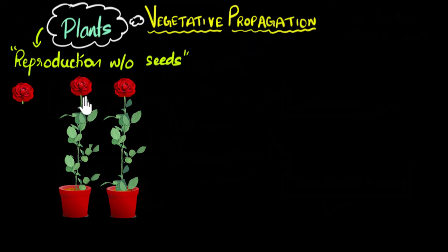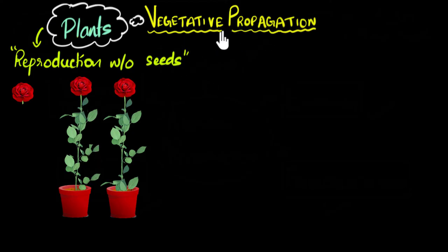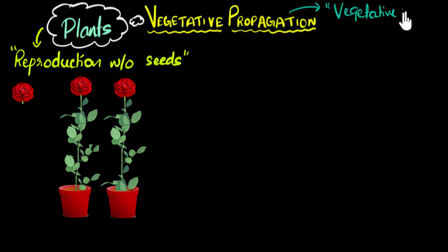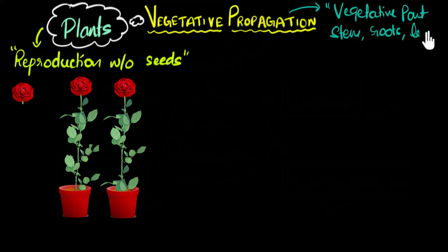In contrast, the flowers and the fruits are the sexual parts of the plant. When they are used in reproduction, we call that sexual reproduction, which we'll talk about in detail in future videos. So to write this down: vegetative propagation uses the vegetative parts — the stem, the roots, or the leaves — to propagate new plants.